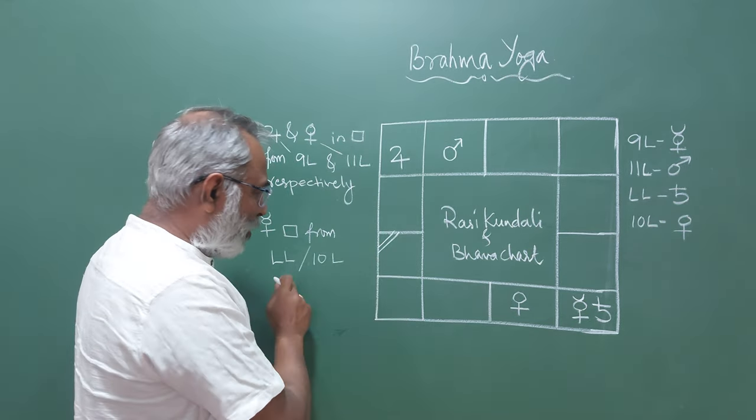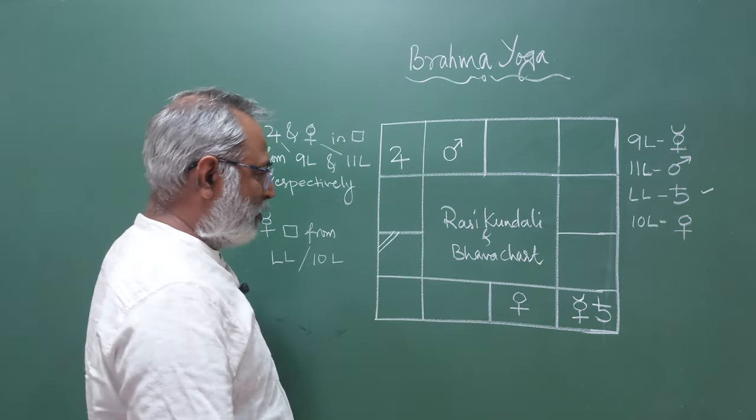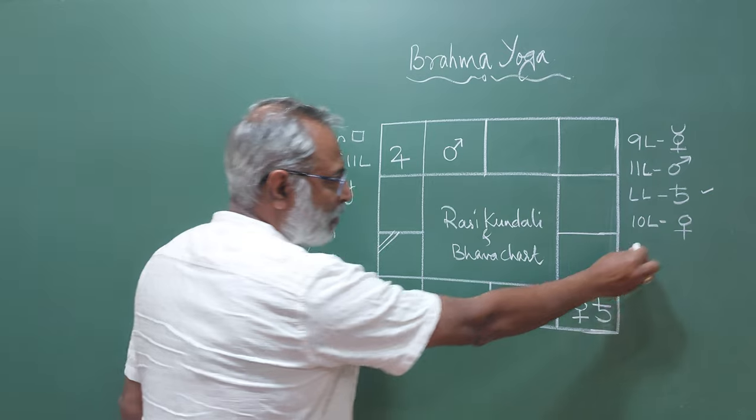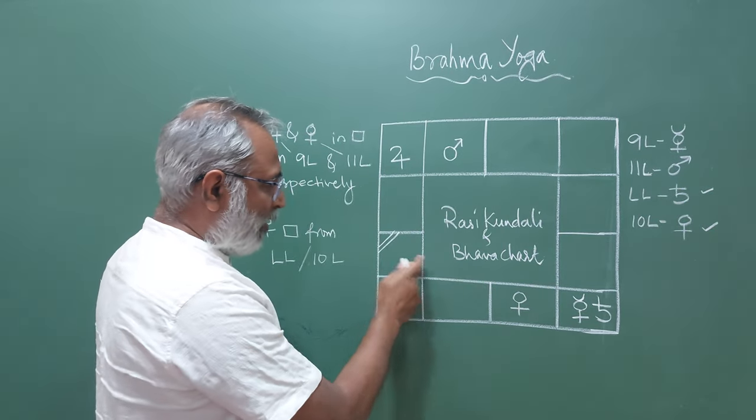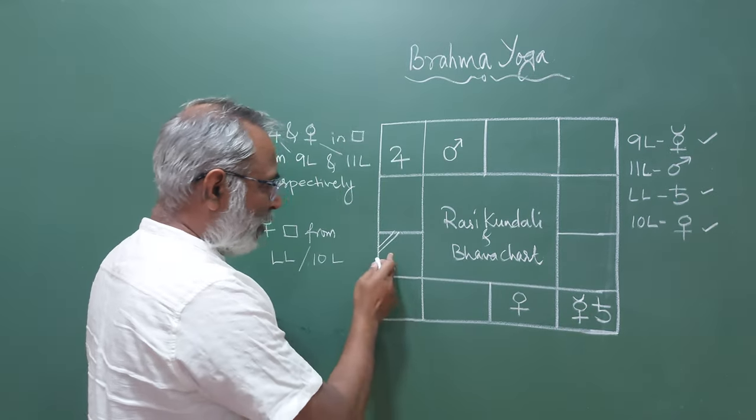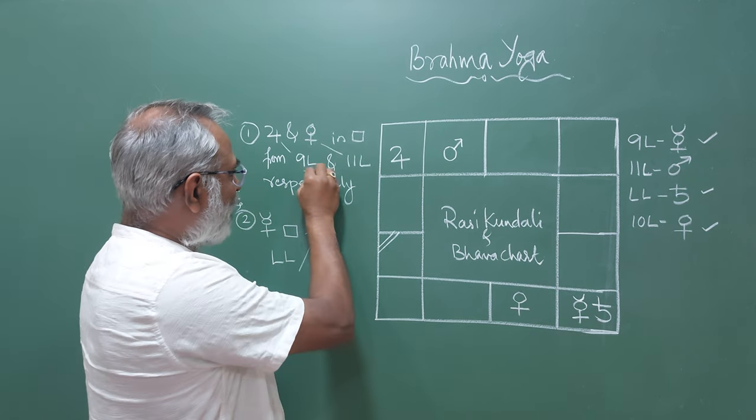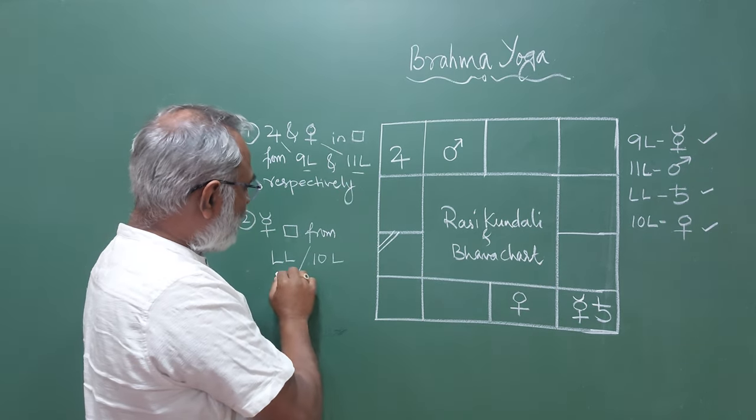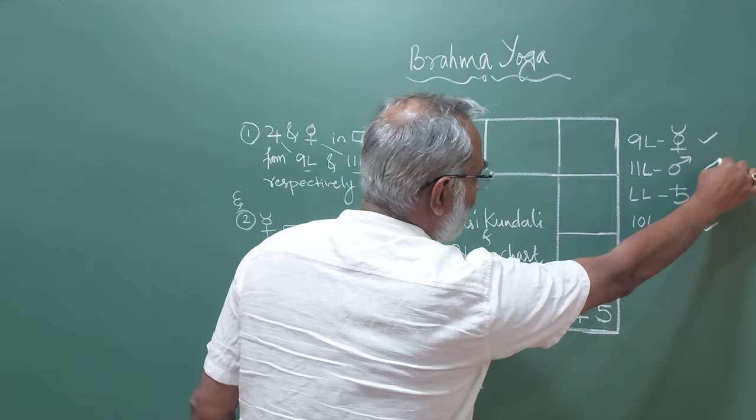I have taken Capricorn ascendant. Here the ascendant Lord is Saturn. The tenth Lord is Venus. The ninth Lord is Mercury. The eleventh Lord, these are the lords which are required. So the ninth Lord, eleventh Lord, Lagna ascendant Lord and tenth Lord. So the eleventh Lord is Mars.